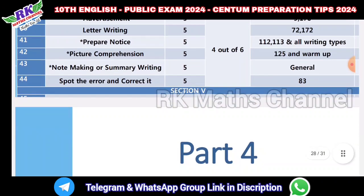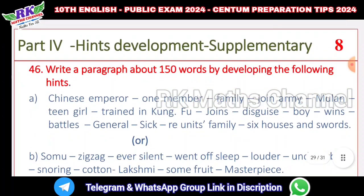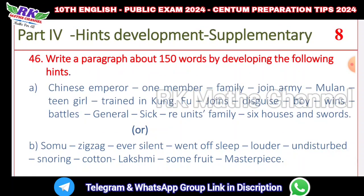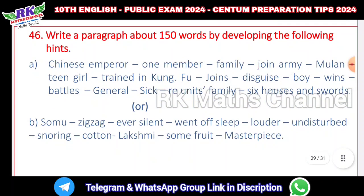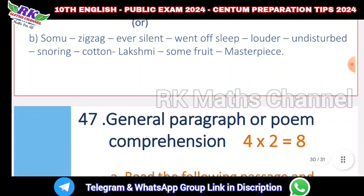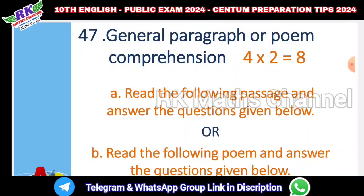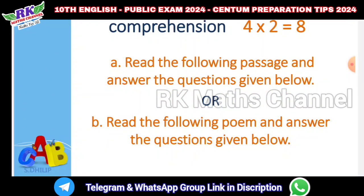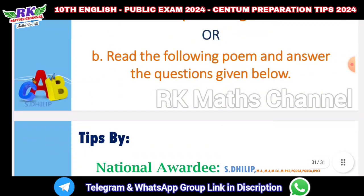Last part - Part 4: two questions of 8 marks each, totaling 16 marks. Question number 46 is hints development - develop a paragraph of 150 words from hints. Question number 47 is general paragraph or poem comprehension - a paragraph with five questions to answer. That completes the 8-mark section, totaling the full English subject preparation overview.